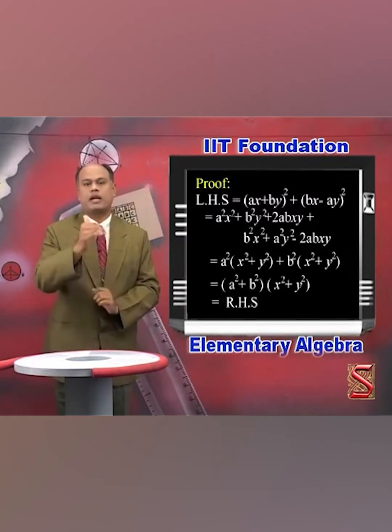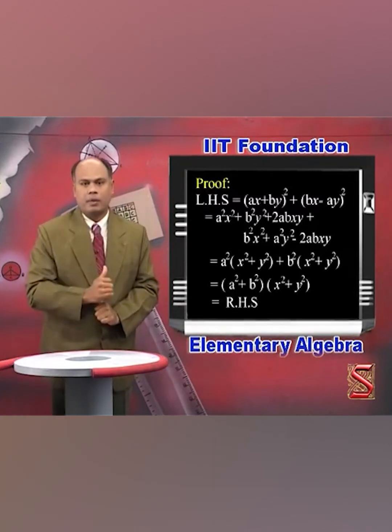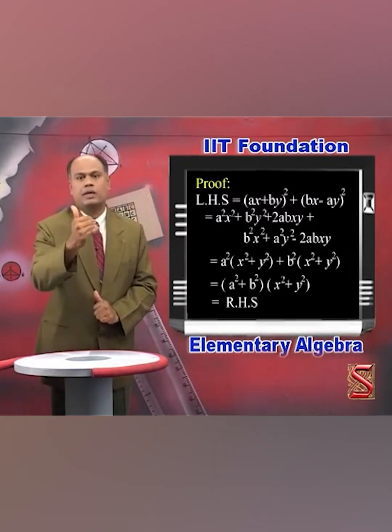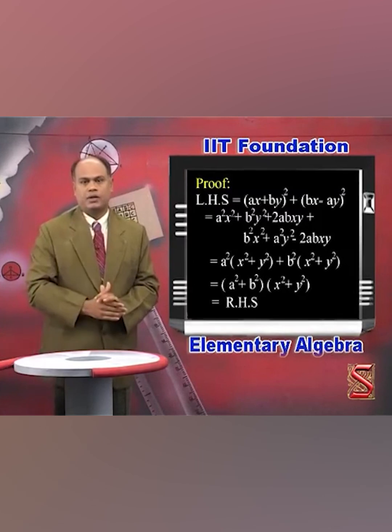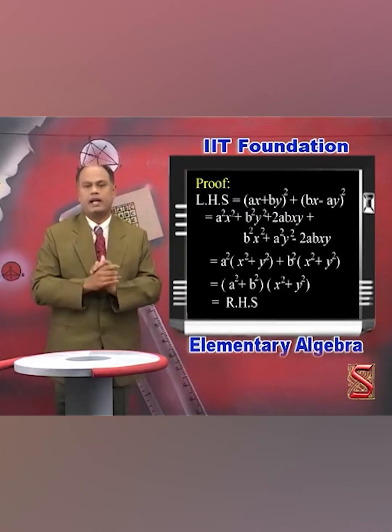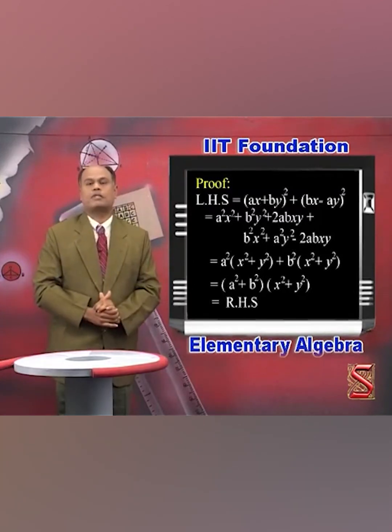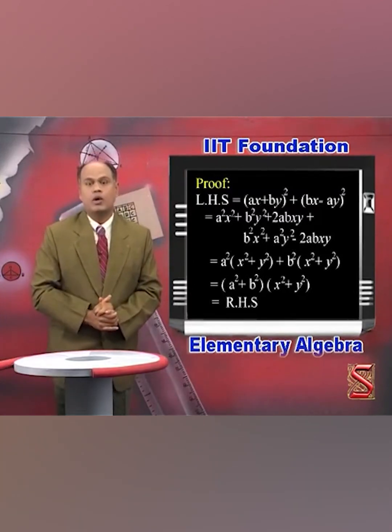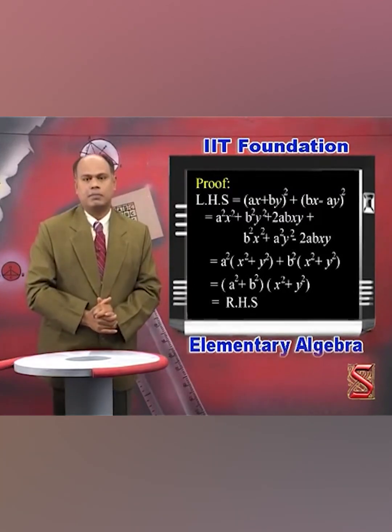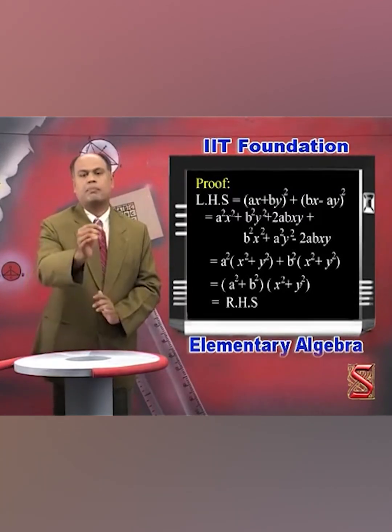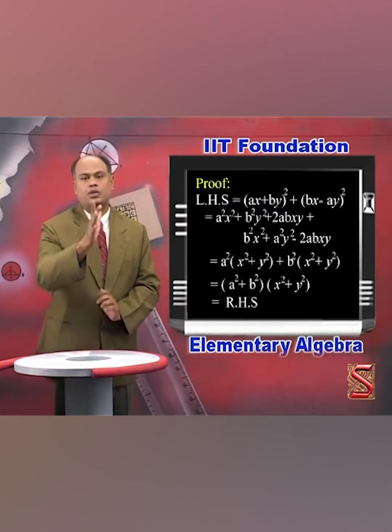Here we take A² common and also B² common, so we finally get (x² + y²)(A² + B²). This completes the solution.